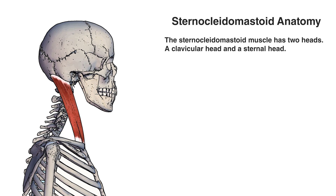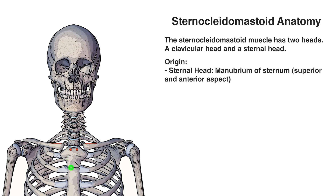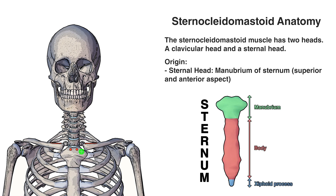We've swapped back to an anterior view because it's a lot easier to see the origin points from this position. You can see those origin points marked out here in red. We'll start with the sternal head, which connects onto the manubrium of the sternum — that top section here. In terms of what part of the manubrium it's originating on, we could describe it as the superior and anterior aspect.